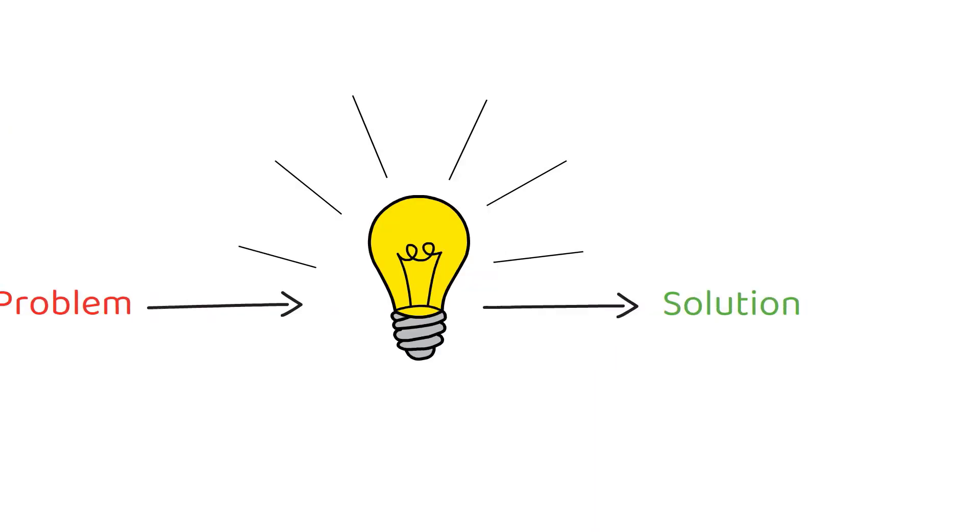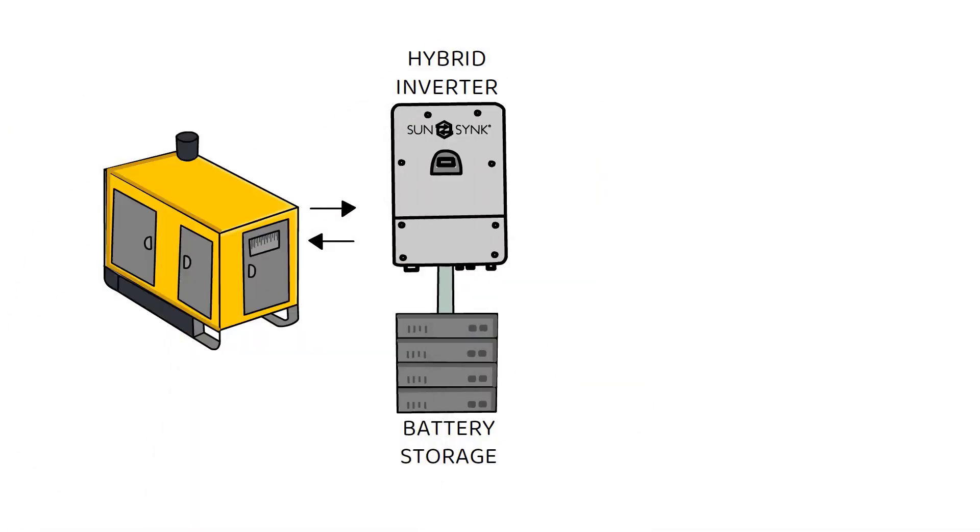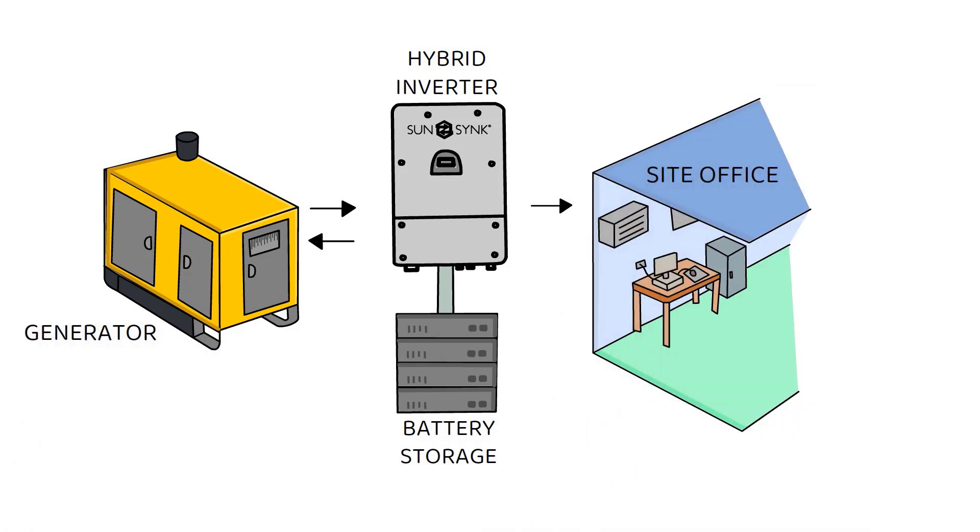SunSync has a solution. By placing a SunSync hybrid inverter and battery storage between a generator and a site office power supply, the inverter can automatically control power flow by switching the generator on and off. Once the batteries are full,